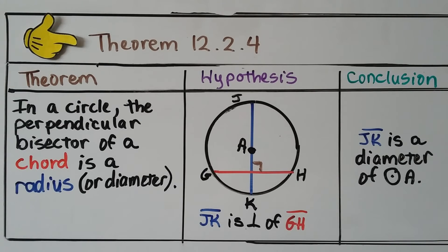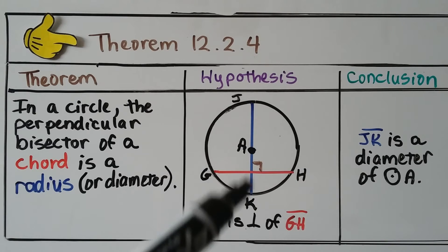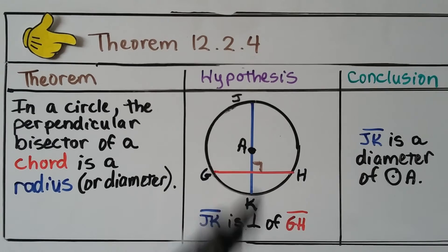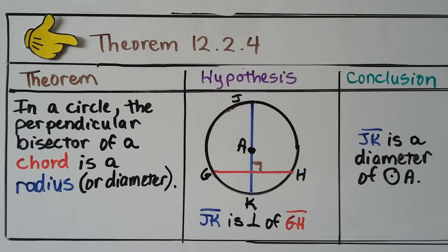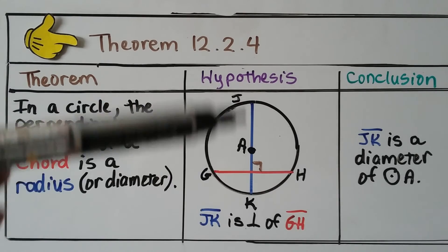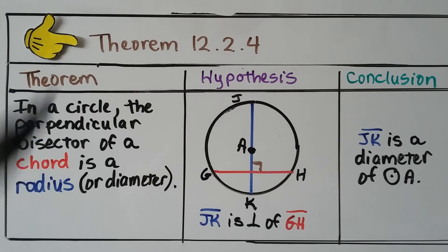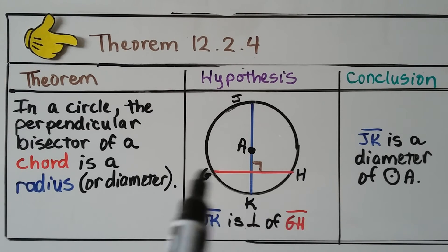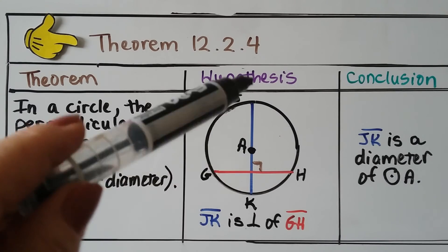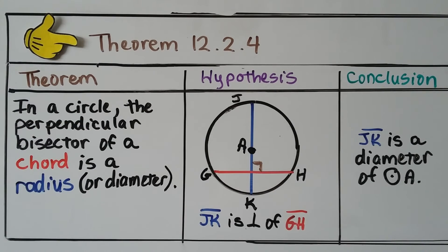Our next theorem for your notes is 12.2.4, and it says in a circle, the perpendicular bisector of a chord is a radius or a diameter. So we've got segment JK. It's a diameter, isn't it? It's perpendicular to this chord GH, this segment GH. Our conclusion is that this diameter, this segment JK, is a diameter of circle A. See we have a right angle there? It's perpendicular.